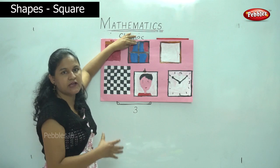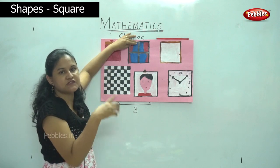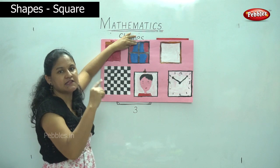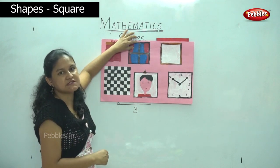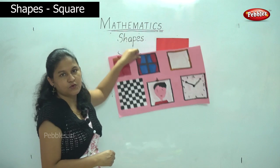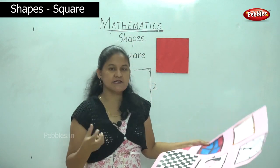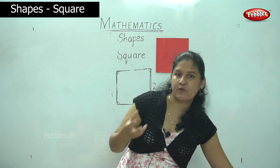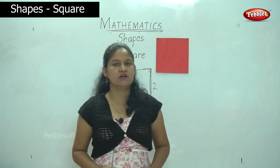So if you take a square, all the four sides of the square are of equal length and the angles are also equal. This is a square. When you go around in your house, you can collect small objects that are square in shape and show it to mummy.